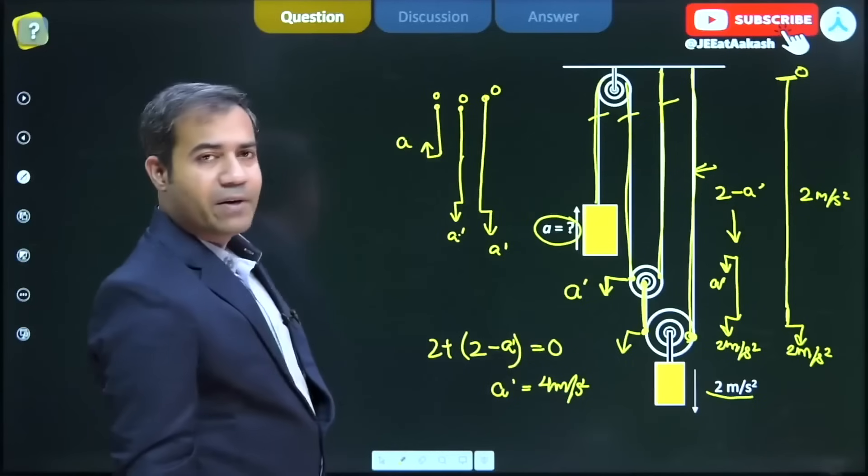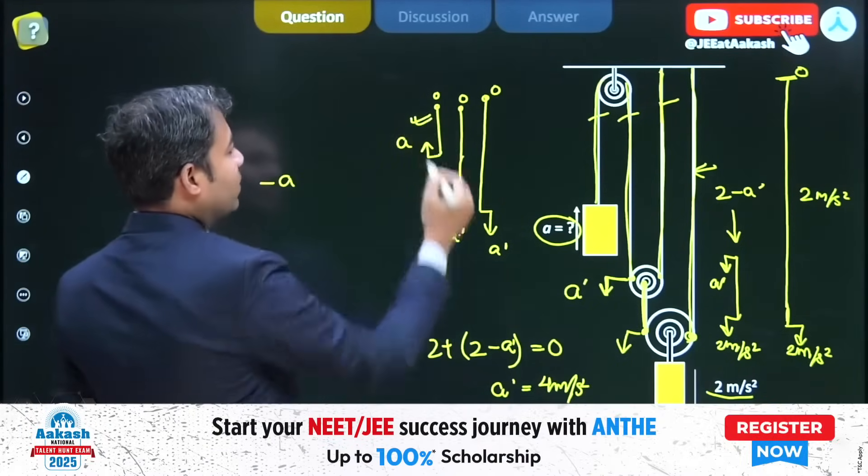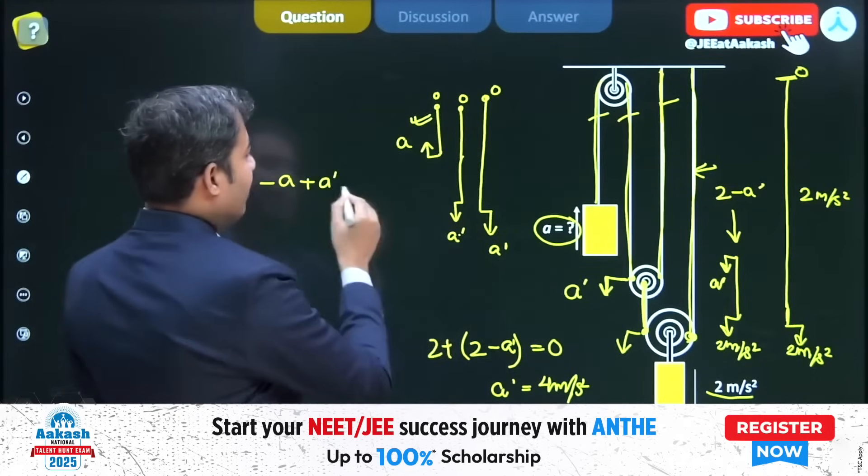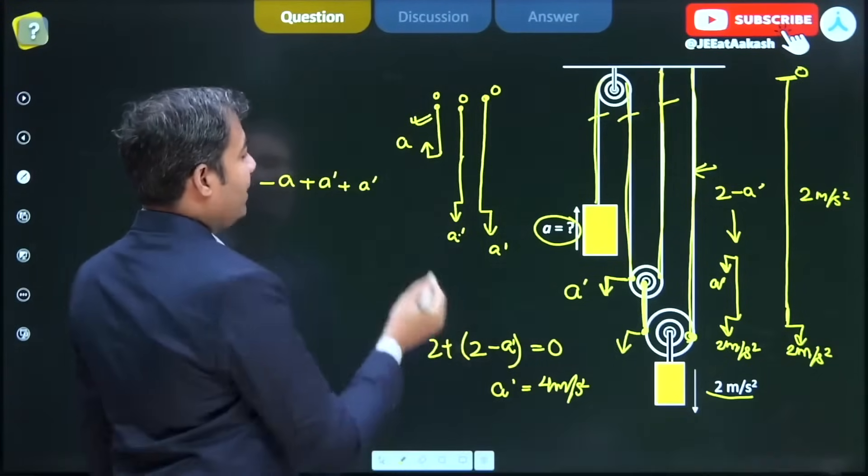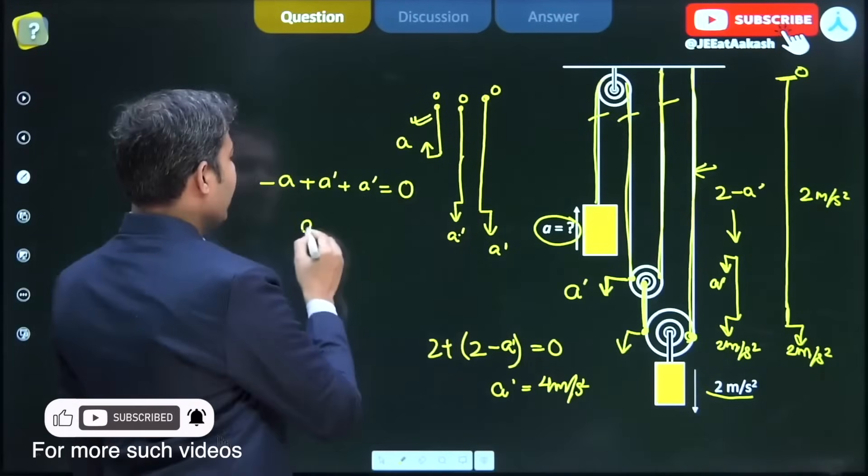We write the changes: minus a for the leftmost, plus a' for the middle, and plus a' for the left one. The total has to be zero, which gives a equals 2a', which is 8 meters per second squared.